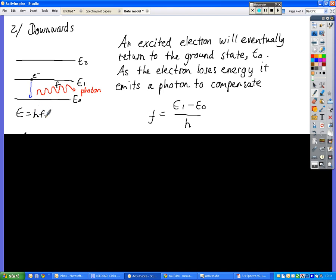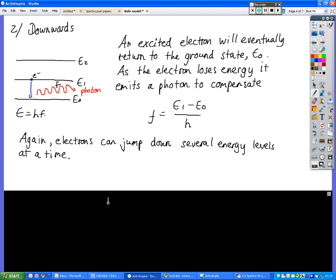That photon is pretty much the same as the photon that would have been put in to start with to cause it to go up a level. But it can come down several energy levels at a time, or it can come down in different stages. It's totally random, the process that is involved in that.